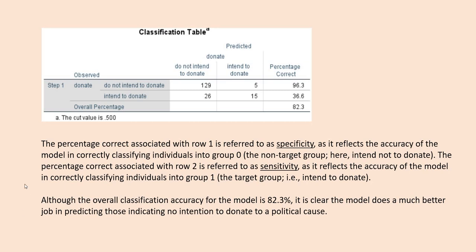The classification table shows that the percentage correct in row 1 is referred to as specificity, reflecting the accuracy of the model in correctly classifying individuals into group 0 — the non-target group. The percentage in row 2 is referred to as sensitivity, reflecting accuracy in classifying individuals into group 1 — the intend-to-donate group. The model does a nice job predicting who does not intend to donate, but a fairly poor job predicting who does intend to donate. The overall classification accuracy rate is 82.3 percent.